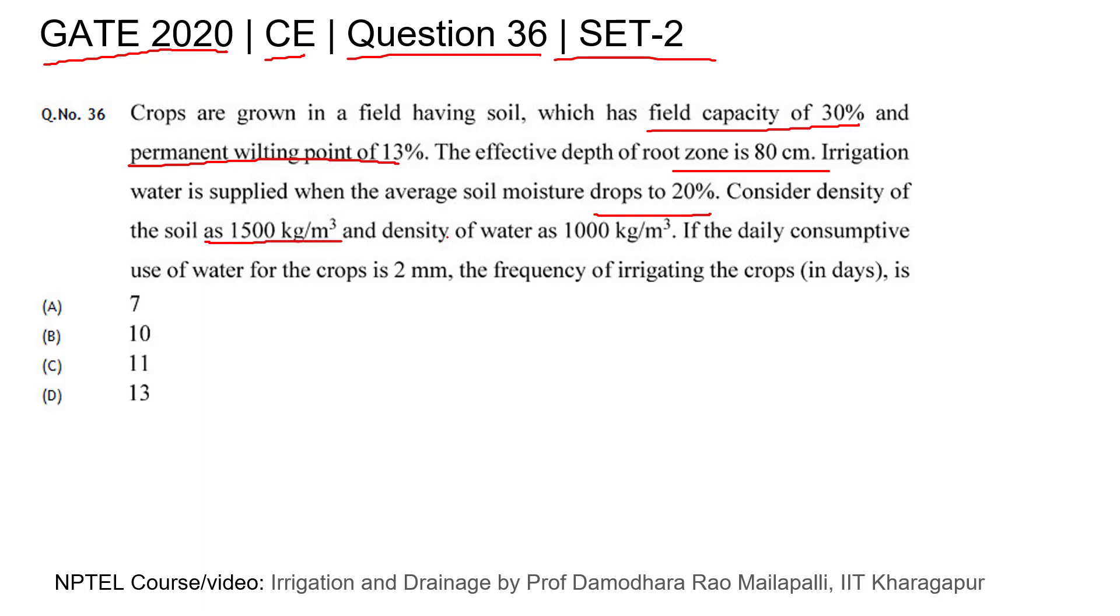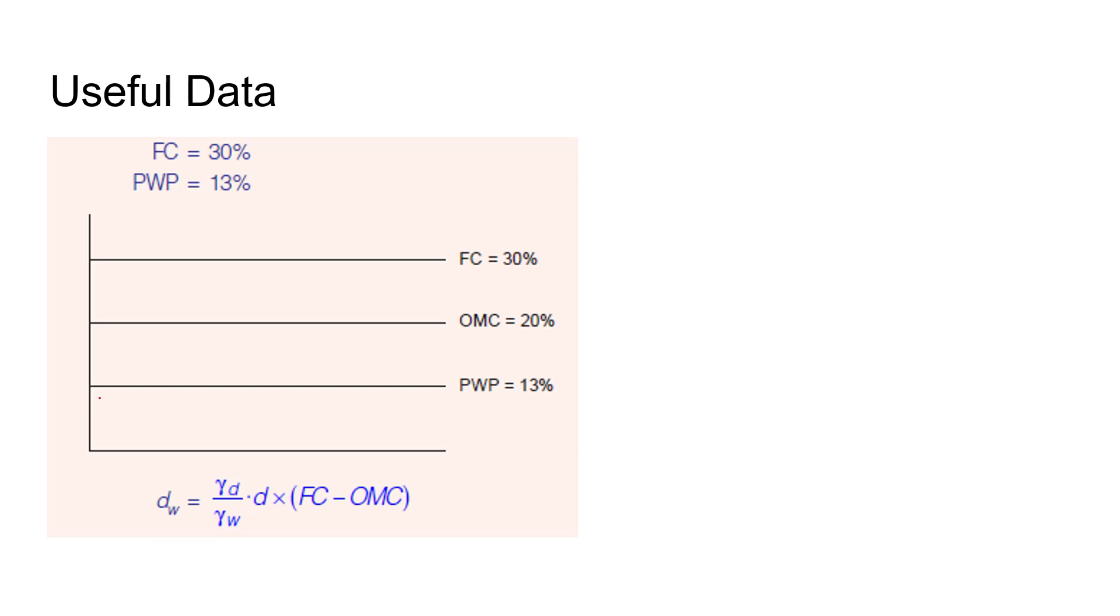Density of water is 1000 kg per meter cube. If the daily consumptive use of water for the crops is 2 mm, the frequency of irrigating the crops in days is? Four options are given for this question. You can refer to NPTEL video lectures.